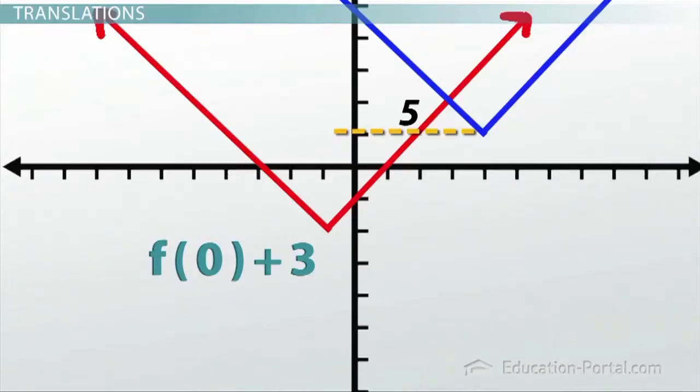Well, what about making the function, instead of f of x, f of x minus five? That way, when I plug in five, I actually get f of zero, which we know gives me the point I wanted.